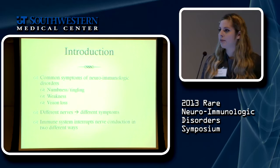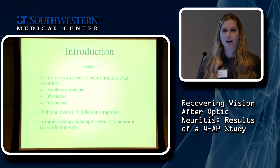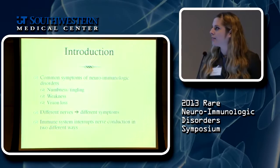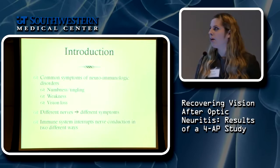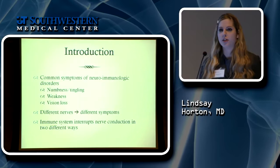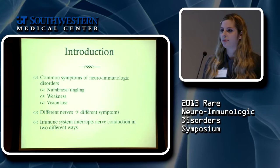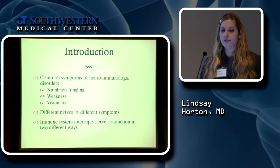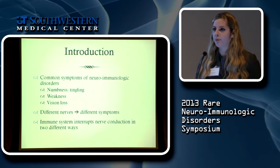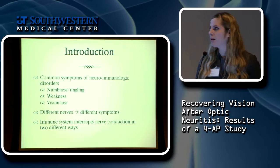As many of you may know or have experienced, there are a lot of common symptoms with neuro-immunologic disorders. A lot of you may have had numbness or tingling, weakness or trouble with walking, or vision difficulties from optic neuritis. While these are all different symptoms, there is one common factor: they're all due to immune damage to the nervous system. It just depends on where the immune attack is as to what symptoms you have.